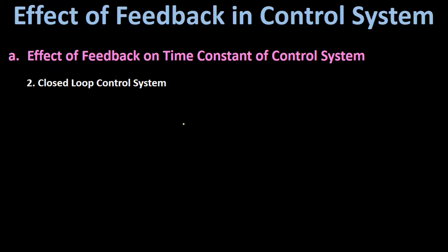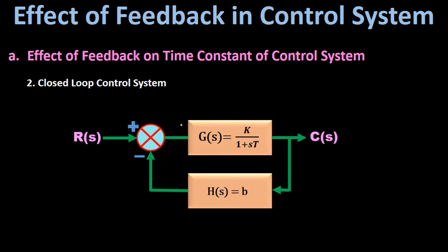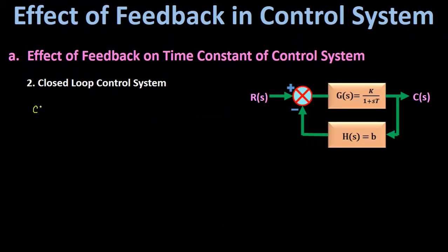When we introduce feedback to the open loop control system, it becomes a closed loop control system. Here we are taking a negative feedback control system. This is the block diagram representation: R(s) is the input, C(s) is the output, G(s) = K/(1 + sT) is the forward path transfer function, and the feedback transfer function H(s) = b is given. The overall transfer function C(s)/R(s) = G(s) / (1 + G(s)·H(s)).